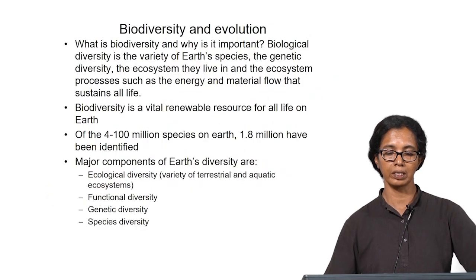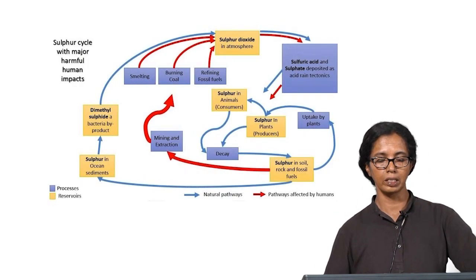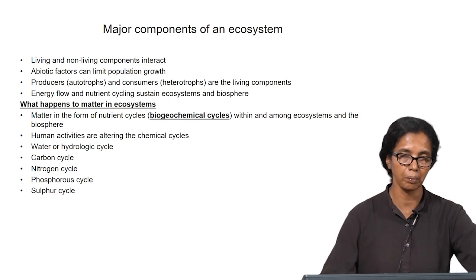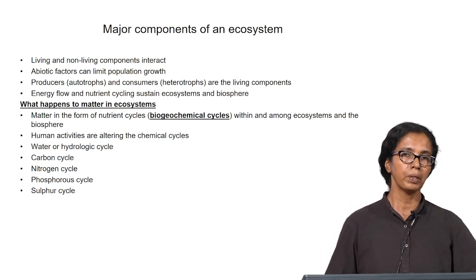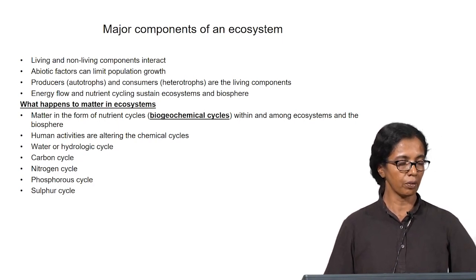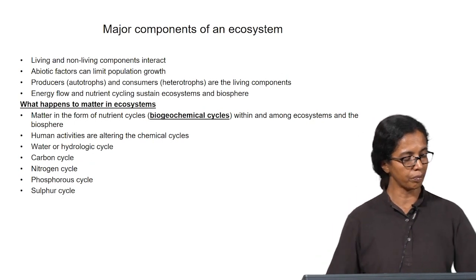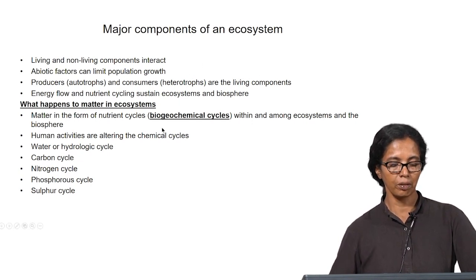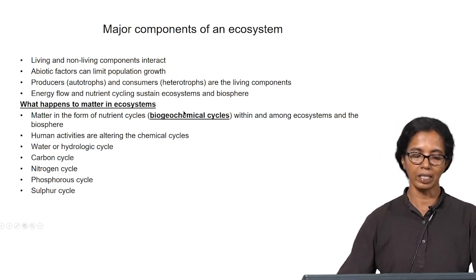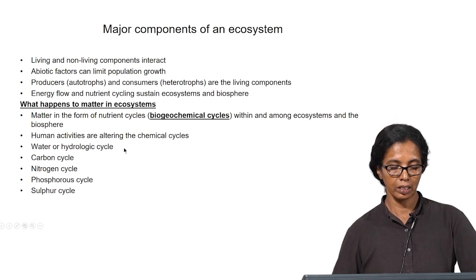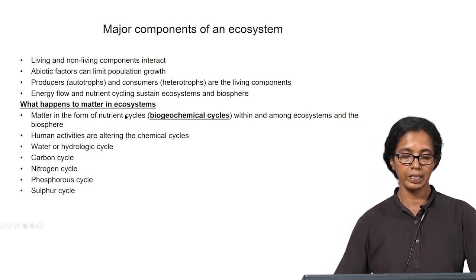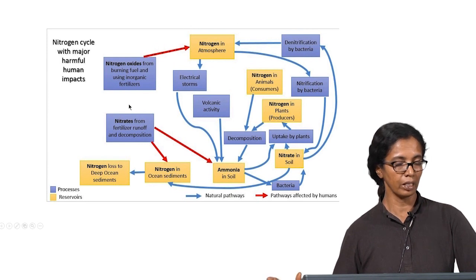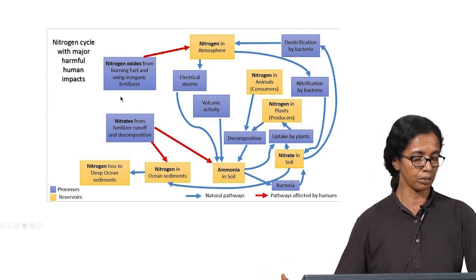Climate change is one of the factors majorly affected by the carbon cycle and also the hydrologic cycle. All these biogeochemical cycles can affect climate as well as the existence of life on earth. It is important to understand how the abiotic part of the ecosystem affects life itself and how it affects ecosystems and their maintenance.